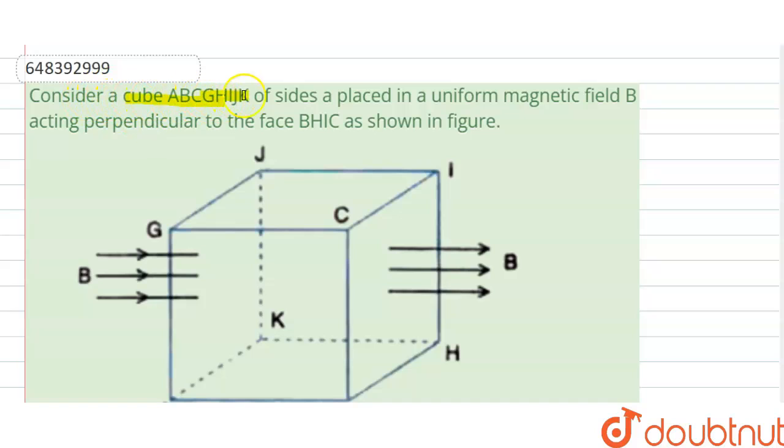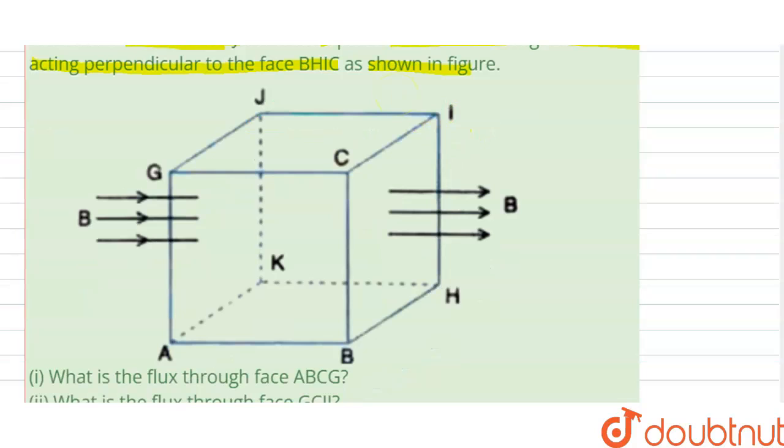Consider cube AVCGHIJK of side a placed in a uniform magnetic field B acting perpendicular to the face BHIC as shown in figure. Here is our direction of magnetic field in this direction and this is perpendicular to BHIC and also perpendicular to this area vector that is KJGA.